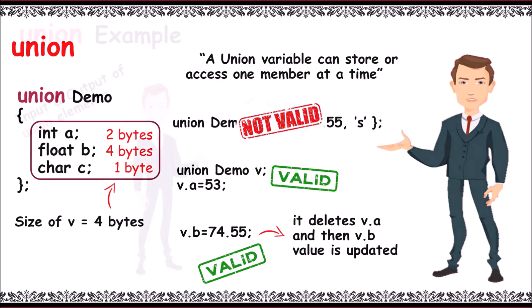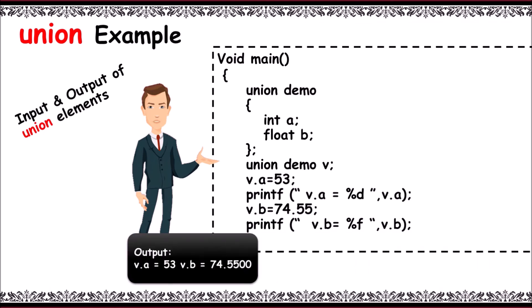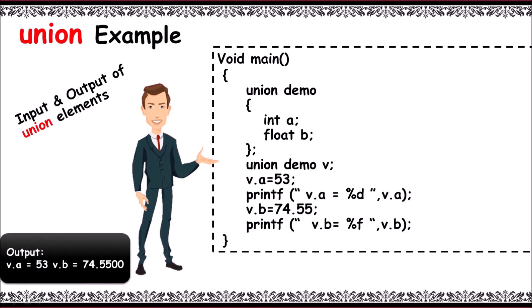Next, program on union: main function with union demo containing two members, int a and float b. Variable declaration: union demo v. Initialize v.a = 53 and then print it. Next, v.b = 74.55. v.a gets replaced with v.b and prints 74.55. The output will be: v.a = 53, v.b = 74.55.